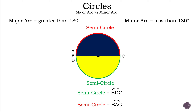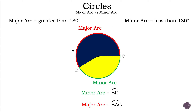Now let's go ahead and increase the red arc just a bit more. The red arc has become the major arc because it is more than 180 degrees, and the green arc has become the minor arc because it is less than 180 degrees. So our minor arc is still BC or CB, and our major arc is still BAC or CAB.